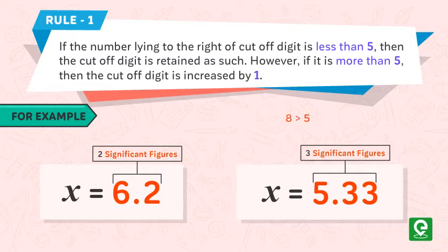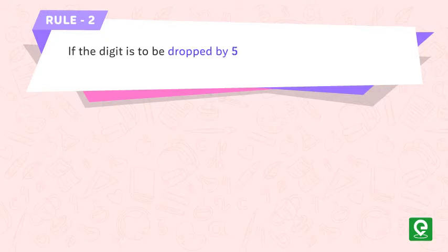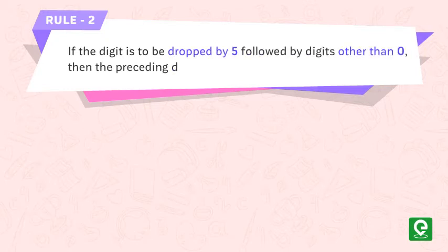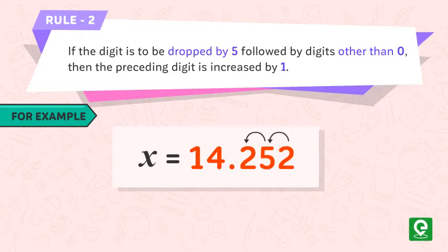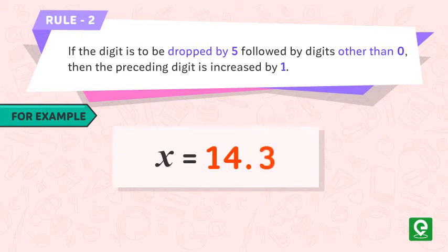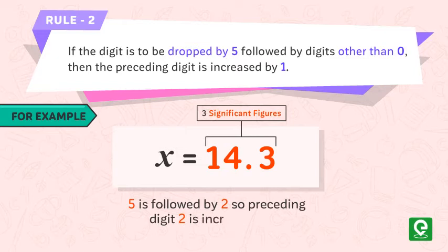Rule number two: if the digit to be dropped is five followed by digits other than zero, then the preceding digit is increased by one if it is even. For example, x = 14.252 is rounded off to x = 14.3, which has three significant figures, because five is followed by two, so the preceding digit two is increased by one.